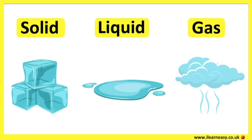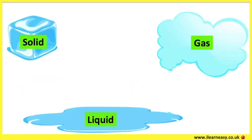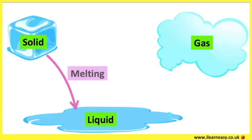Matter can change in different ways. There are six ways in which matter can change. When a solid turns into a liquid, it's called melting.